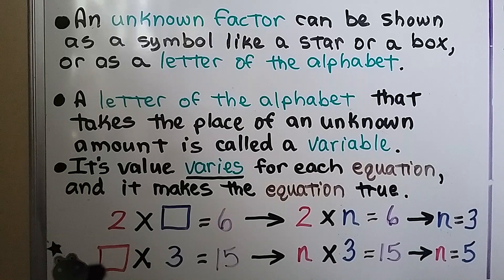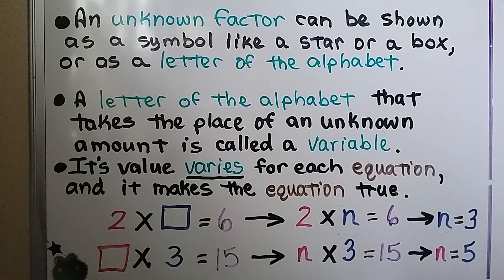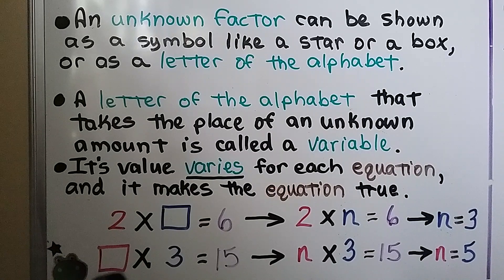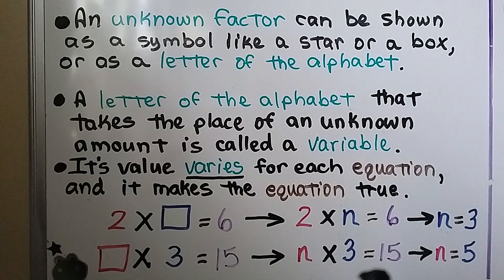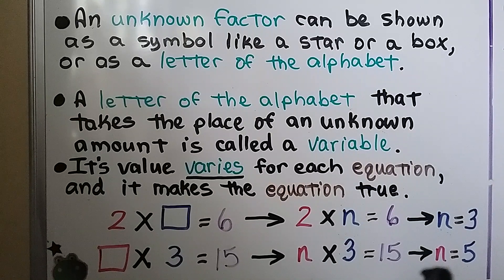Here we have a box times 3 is equal to 15. We know 5 times 3 is equal to 15, so the box must equal 5. We can say n times 3 is equal to 15, which means n is equal to 5.